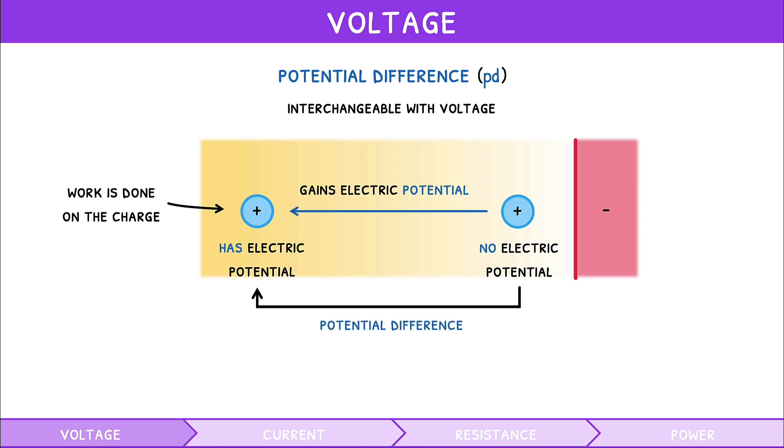However, this is functionally the same as voltage, and thus both terms can be used. It should be noted that potential difference is more often used when discussing individual charge movement, whilst voltage is more often used when discussing circuits.